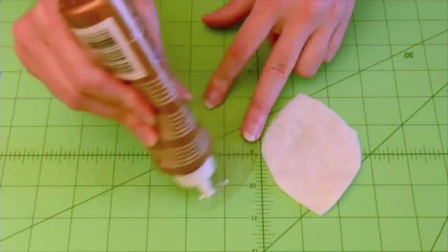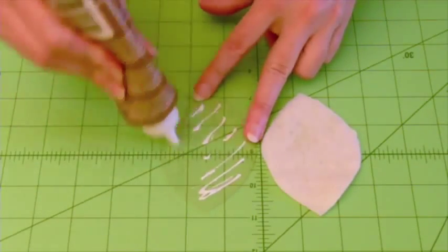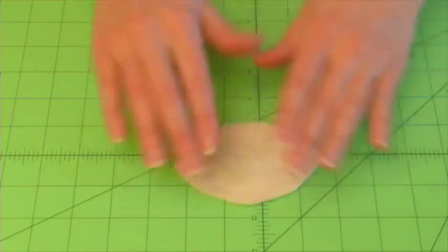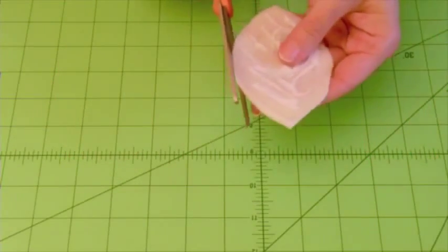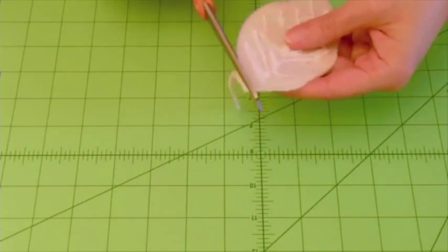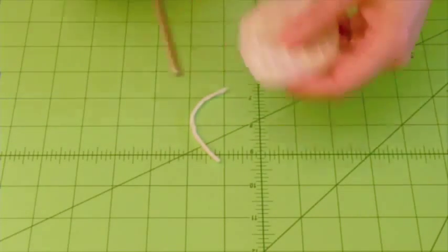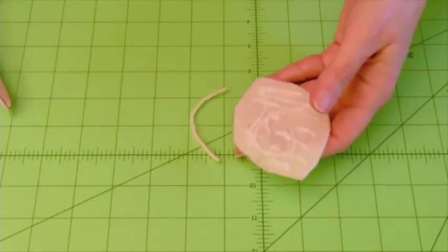Next, we're going to glue this batting to this template. If you can, let that set for just a few minutes. Once you've given it time to set, then carefully trim away any batting that shows sticking out along the edges.